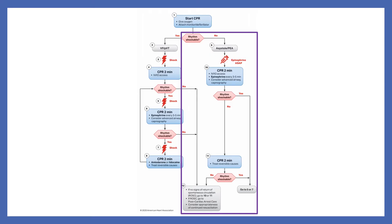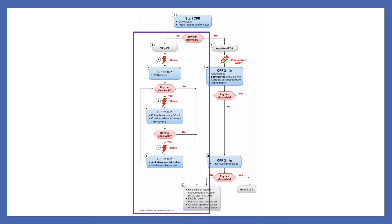Here's a flowchart of the ACLS algorithm for asystole or PEA: CPR is administered continuously, and a check is made every 2 minutes to see if ROSC is established or a shockable rhythm has developed. Epinephrine is given as soon as possible at 3 to 5 minute intervals. For VTac or VFib, the patient is immediately given an electric shock, CPR is performed for 2 minutes, and if the arrhythmia persists, the patient is shocked again and given epinephrine. If after 2 more minutes the arrhythmia continues, antiarrhythmic medication is administered.